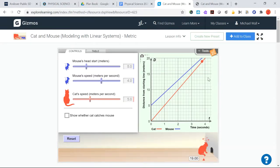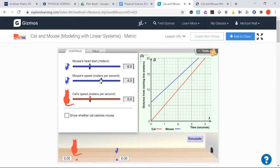So what you do for this one, we'll reset it. You just change these sliders. You can change how much of a head start the mouse gets, you can also change the speed of the mouse. Notice that when I change either of these, something on the graph is changing, either the position that we're starting or the slope of the graph. We can also do the same thing and we can change the speed of the cat.